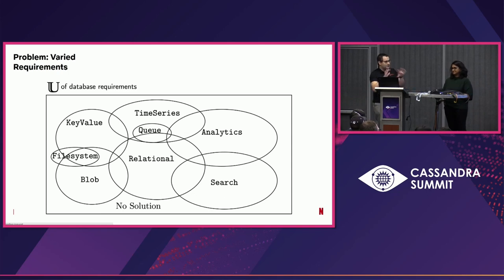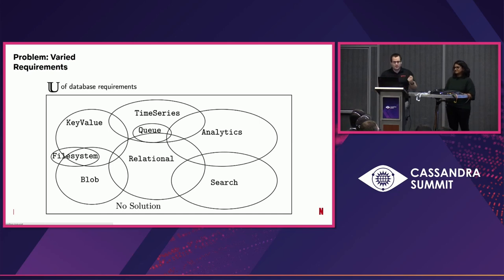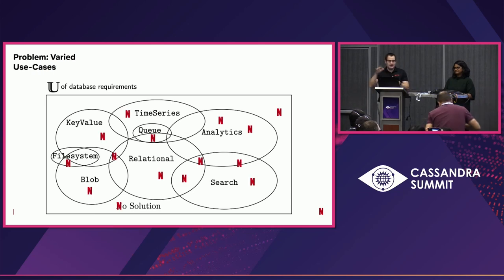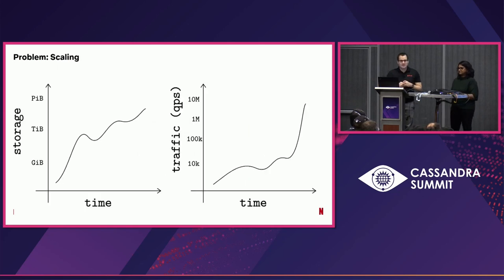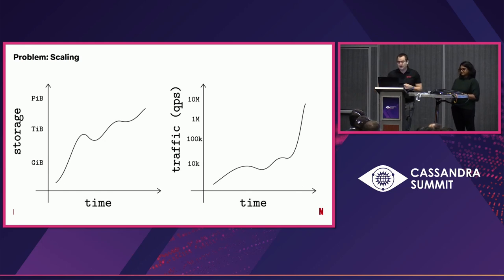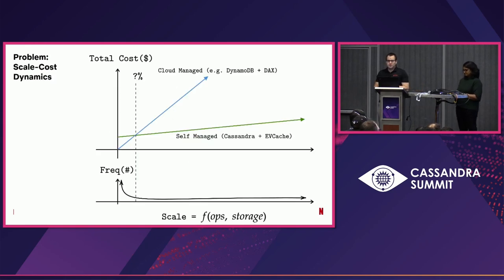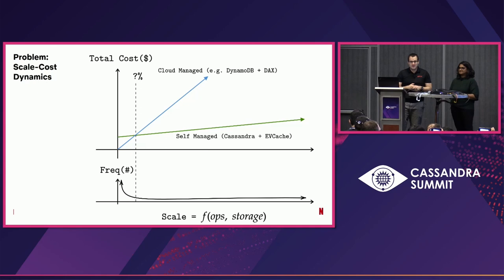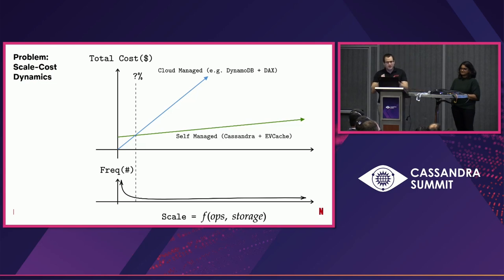It gets harder when different solutions overlap for the same problem. This is our universe of database requirements at Netflix, and a given use case might be satisfied by multiple different solutions. Sometimes use cases live in no-solution land, and that's where Data Platform comes in to build a new solution or convince the user their requirement fits elsewhere. It's not static either — as use cases evolve with more traffic or storage over time, and price is another variable. At a certain scale a cloud-managed offering might be better, but as you scale up that gets expensive and you may need to migrate to self-managed storage. Simple key-value storage wasn't so simple.